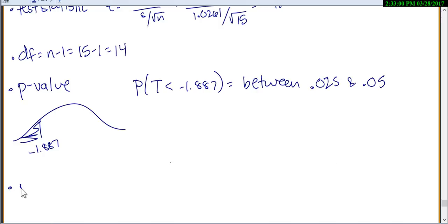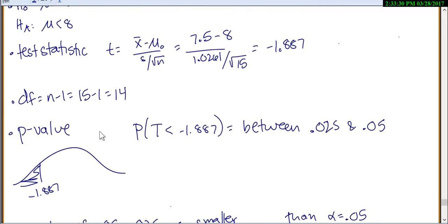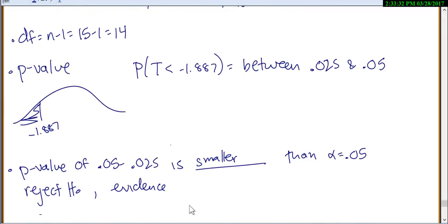So it's between 0.025 and 0.05. I don't know exactly what it is, but somewhere between that. Then we want to compare that to alpha. So a p-value of 0.05 to 0.025, somewhere in that range, is blank, then alpha equals 0.05. So we don't know exactly what it is, but between 0.025 and 0.05, that's smaller than 0.05. So it's smaller. So you get small p-value, we'll reject the null. And that means then you have evidence for the alternative.